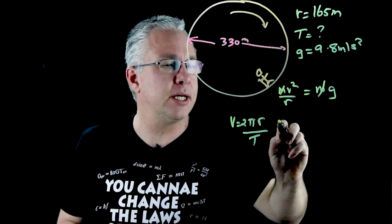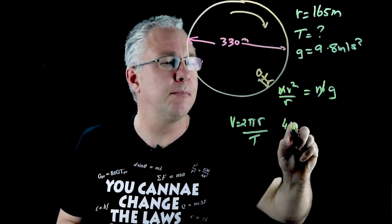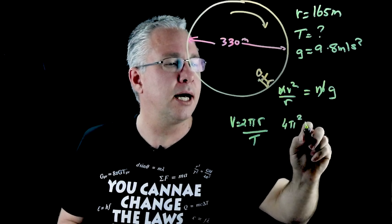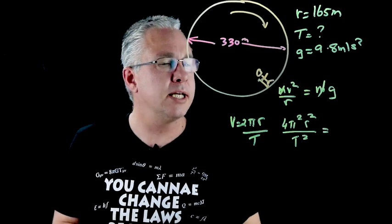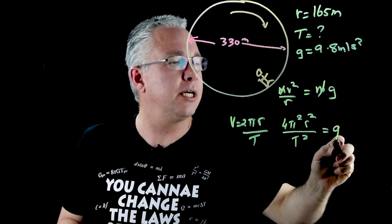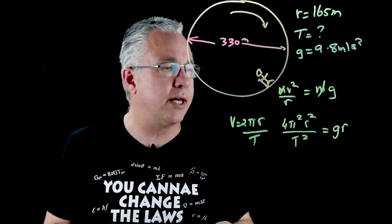So I've got v squared so I have 4π² r² over T² over T² is equal to gr. You'll see I've already moved that r across.